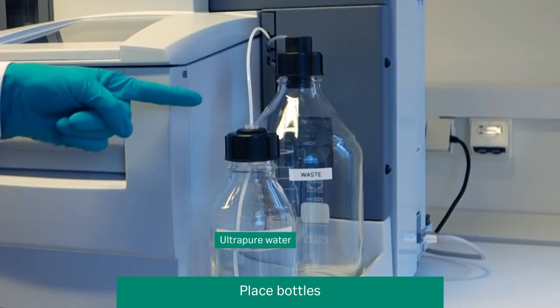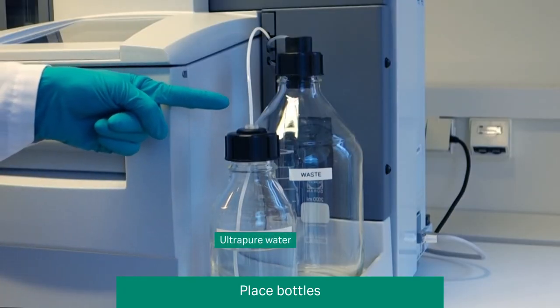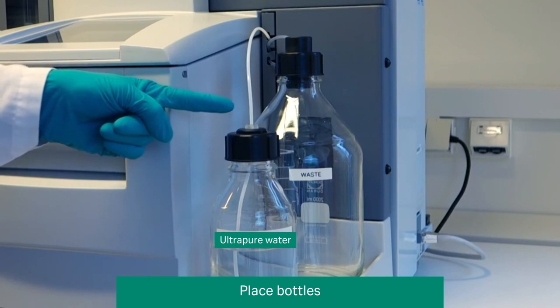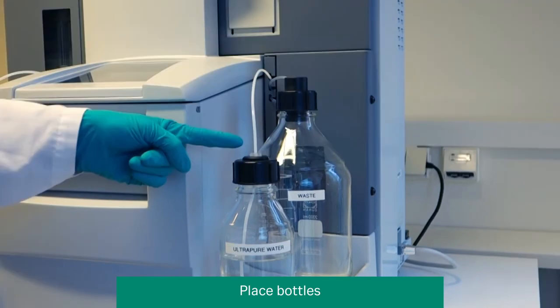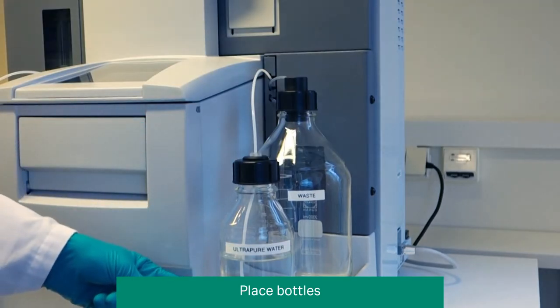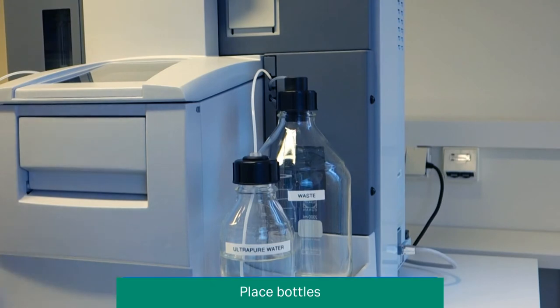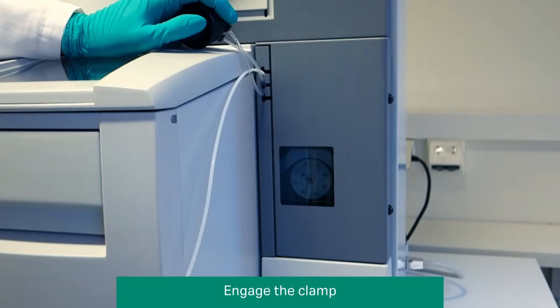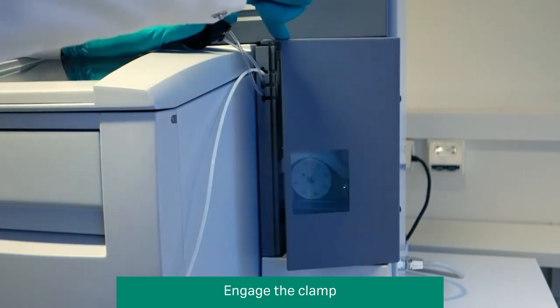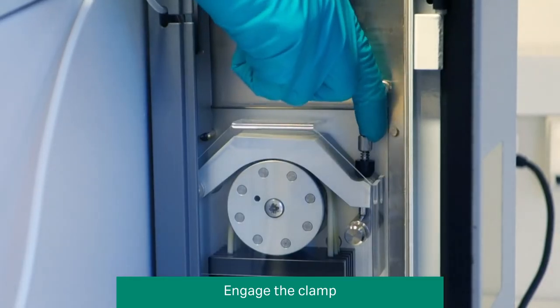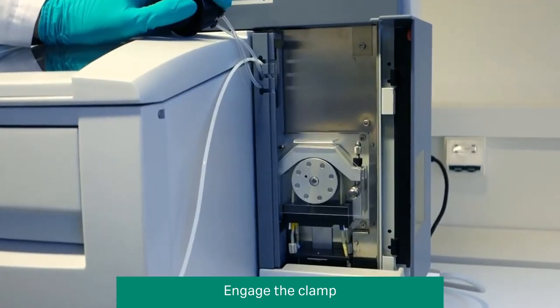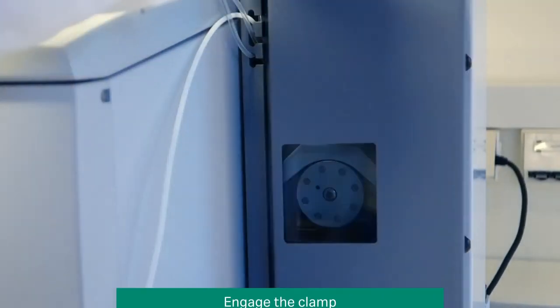Fill a 500ml bottle with ultra-pure water. Fit a cap with septum onto the bottle and place it on the tray. Insert the tube for water into the bottle, again ensuring the tube sits at the bottom of the bottle. Check the peristaltic pump clamp is fully engaged by opening the panel door located behind the waste bottle and pushing the clamp into position, moving in an anti-clockwise direction.